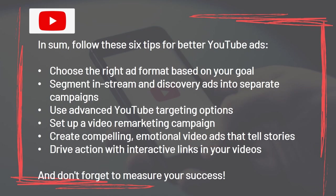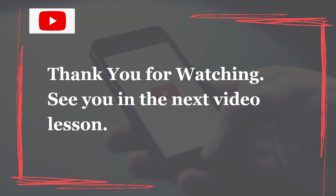In summary, follow these 6 tips for better YouTube ads: Choose the right format based on your goal. Segment in-stream and discovery ads into separate campaigns. Use advanced YouTube targeting options. Set up a video remarketing campaign. Create compelling emotional video ads that tell stories. Drive action with interactive links in your videos. And don't forget to measure your success.